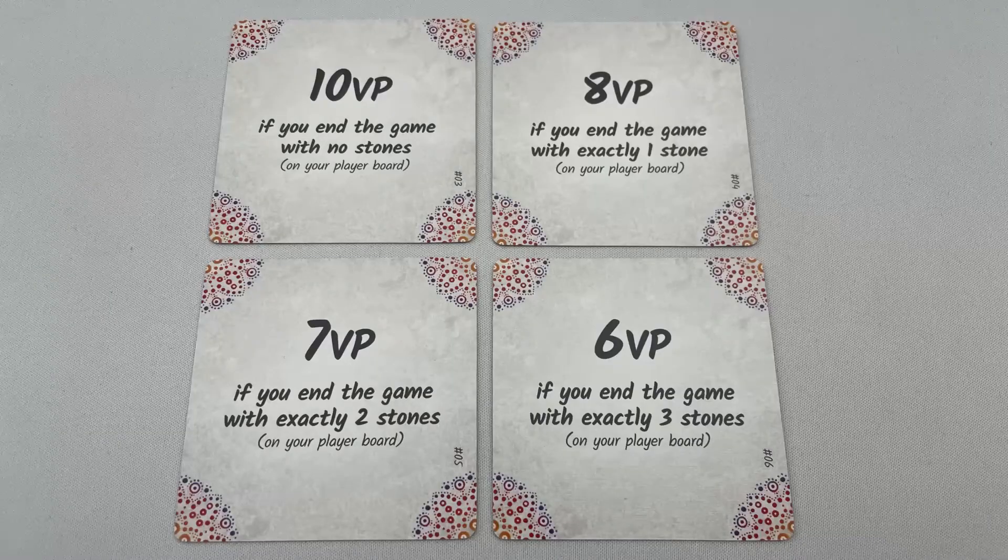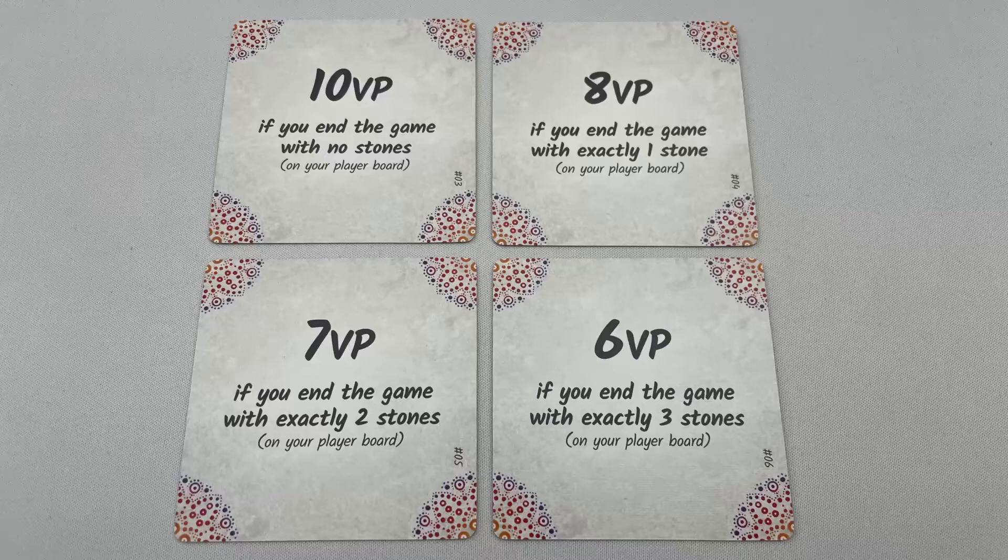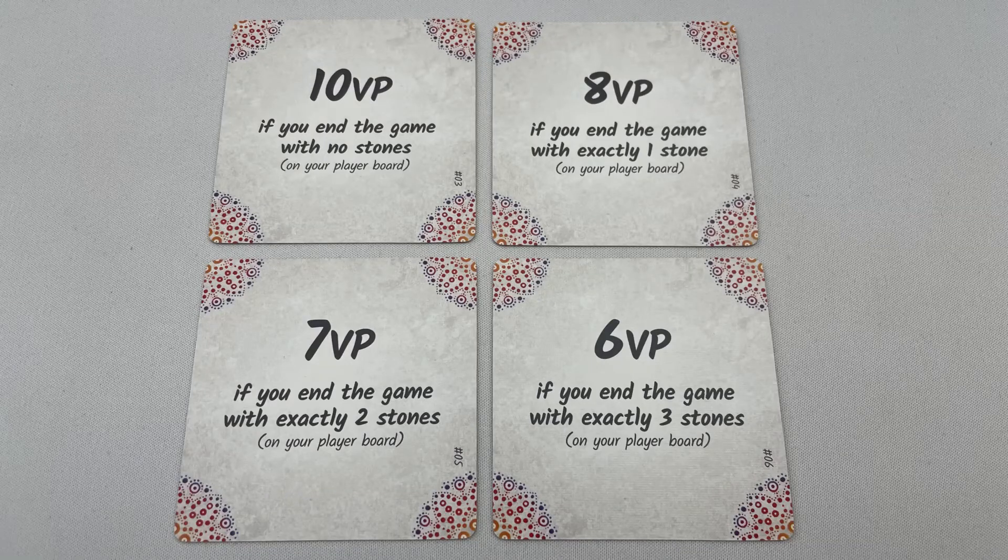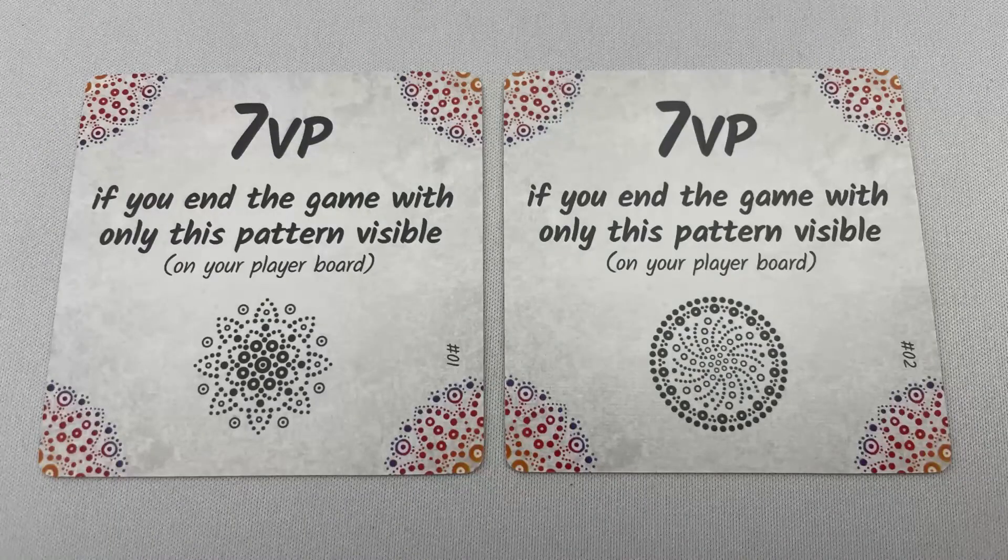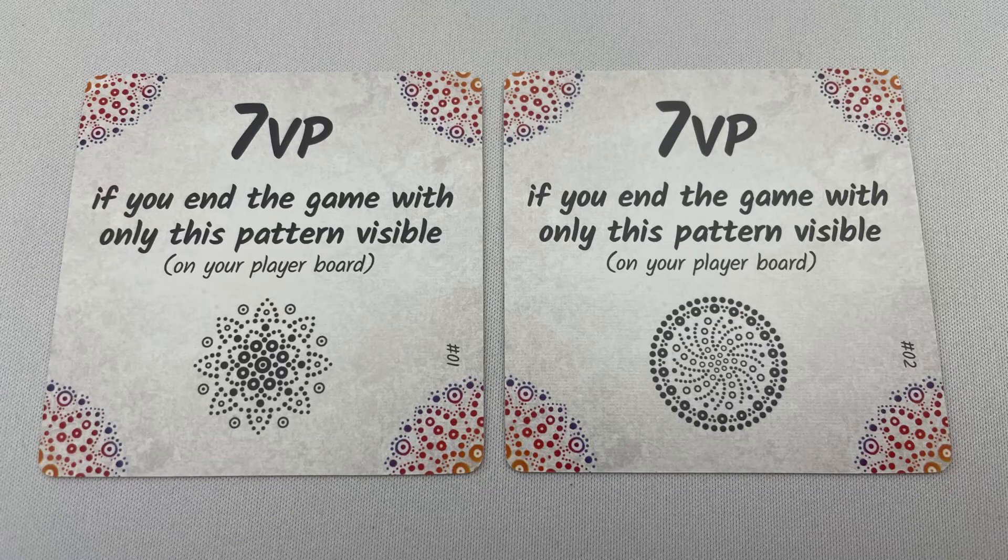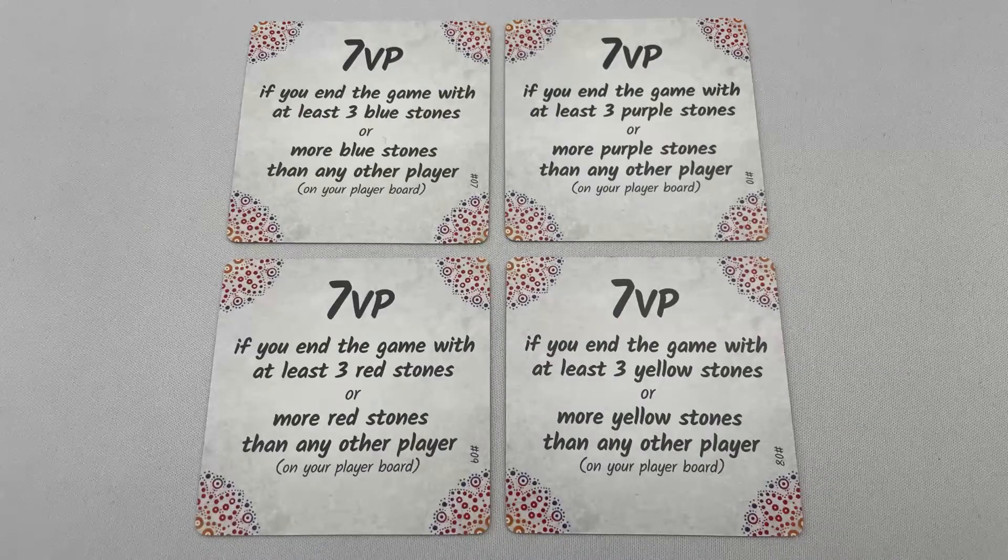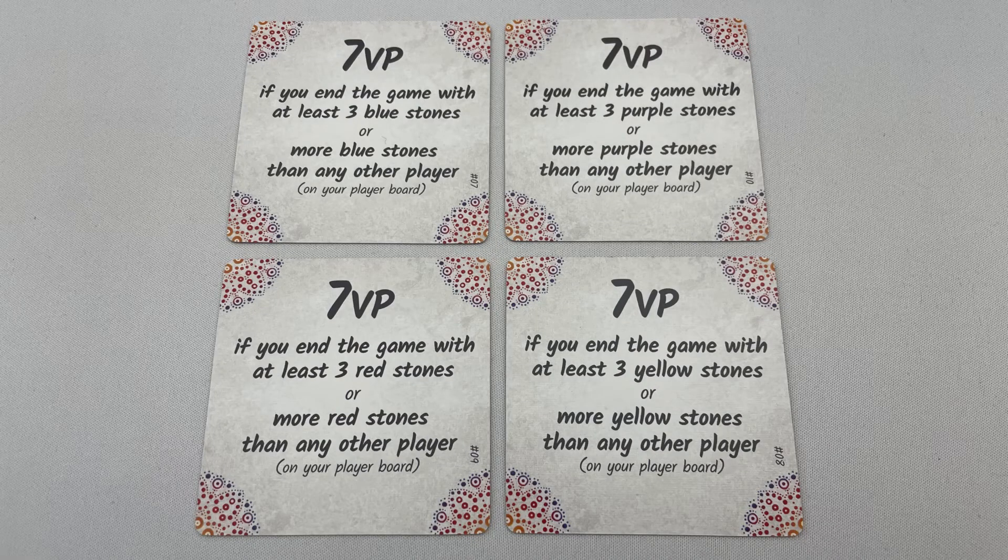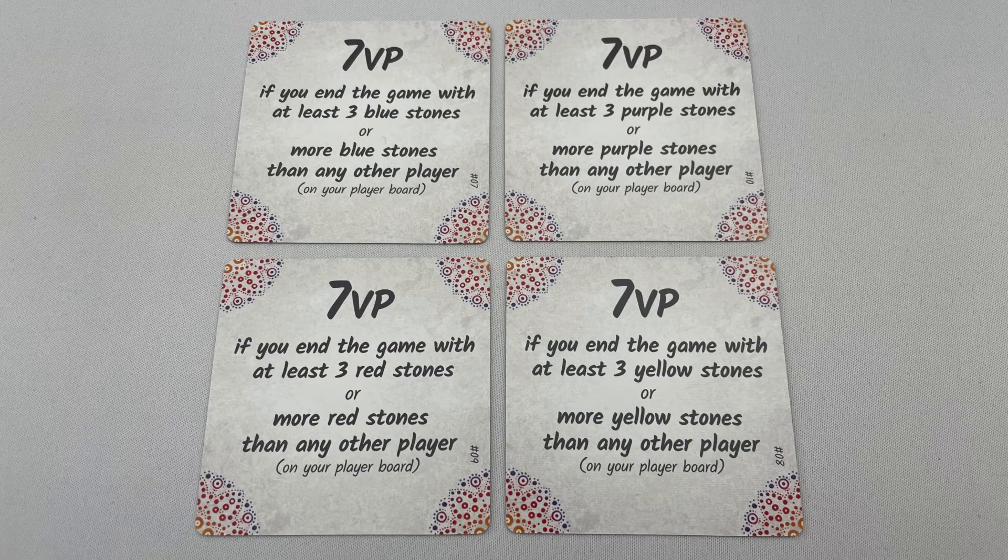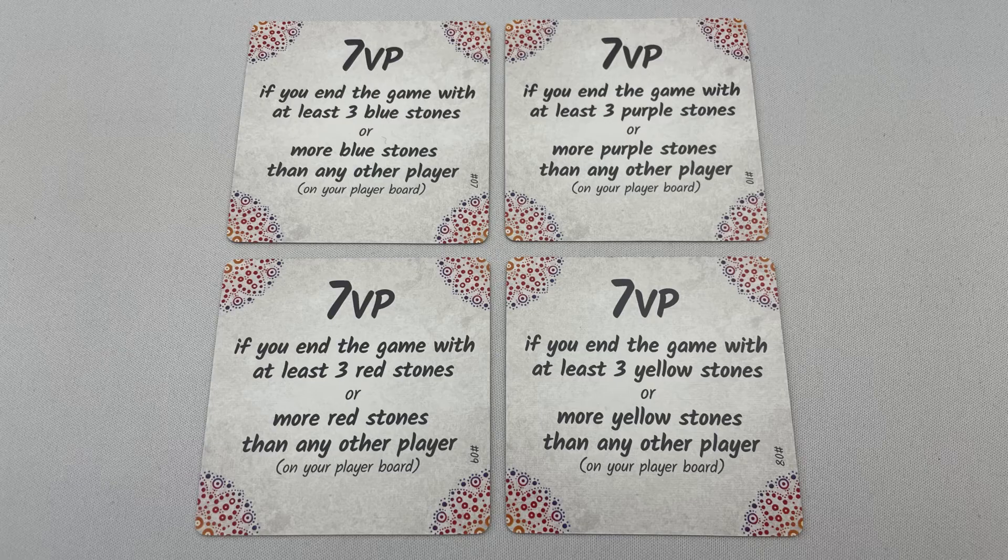The ten objective cards can be split into three different categories. These four award 6-10 points if the player finishes with exactly the number of stones specified on their player board. These two award 7 points if the top stone on all towers on their player board at the end of the game show the specified pattern. The final four award 7 victory points if they end the game with at least three stones of the specific color on their player board, or have more stones of that color on their player board than any other player. And the player with the most points wins with ties broken by the player earlier in turn order.